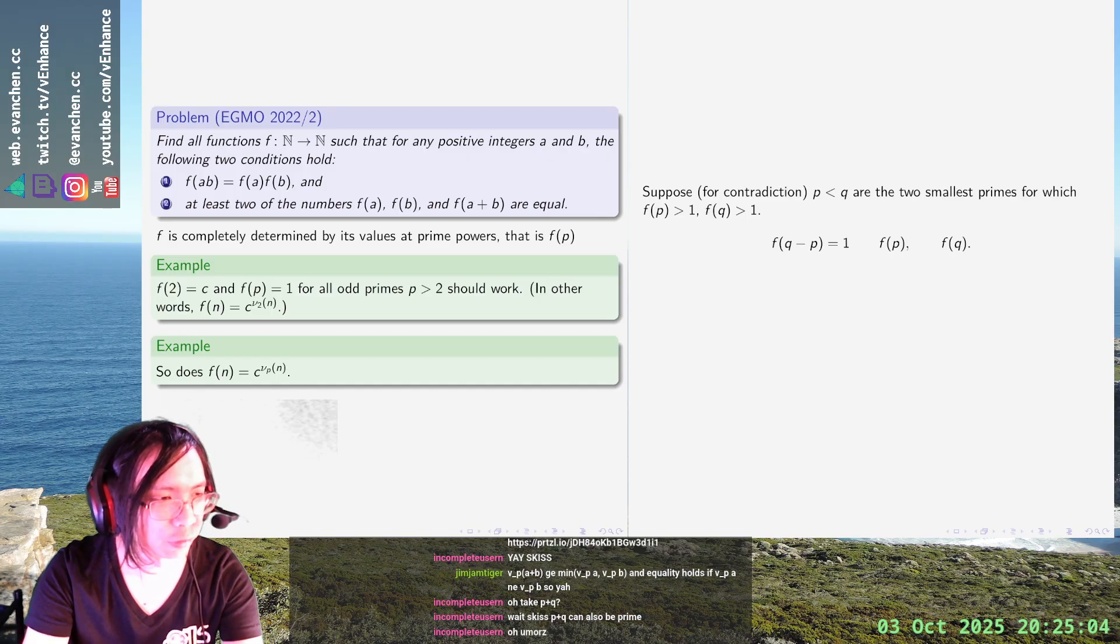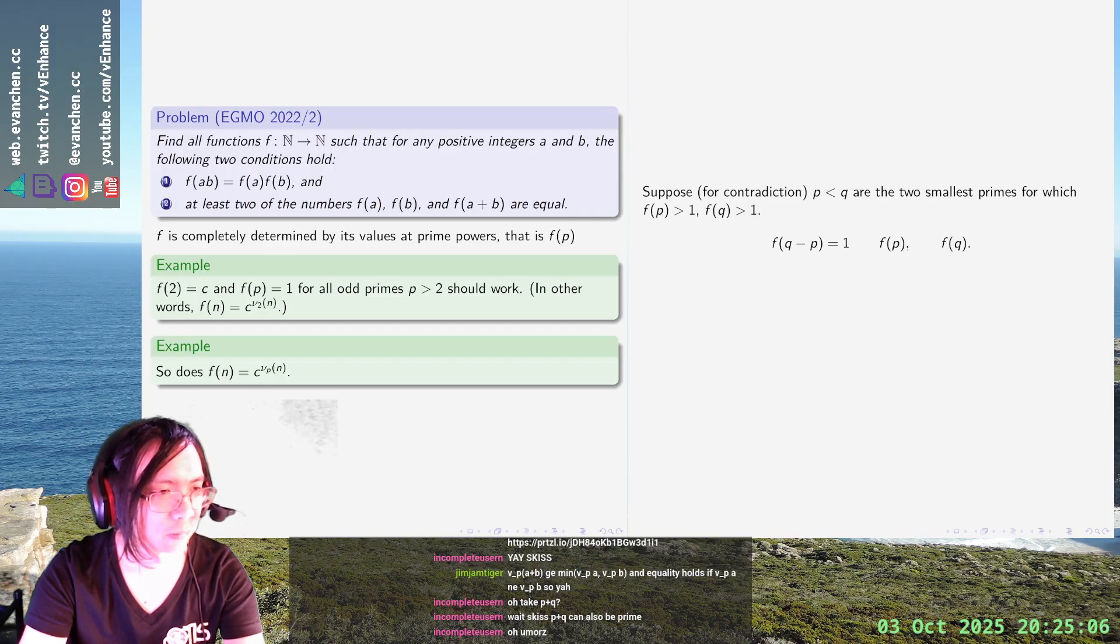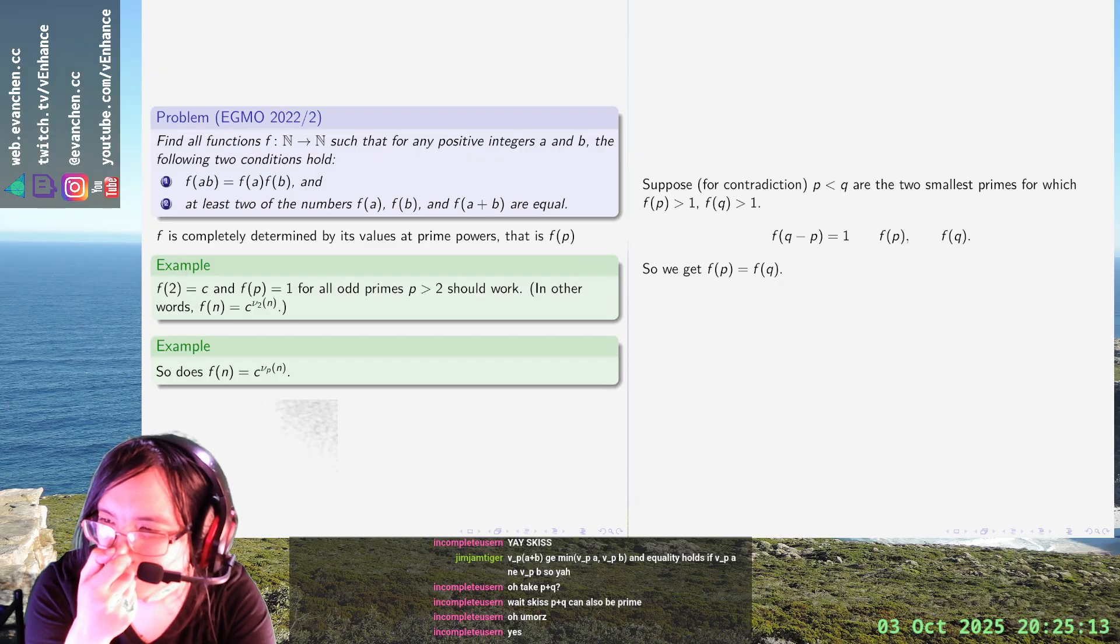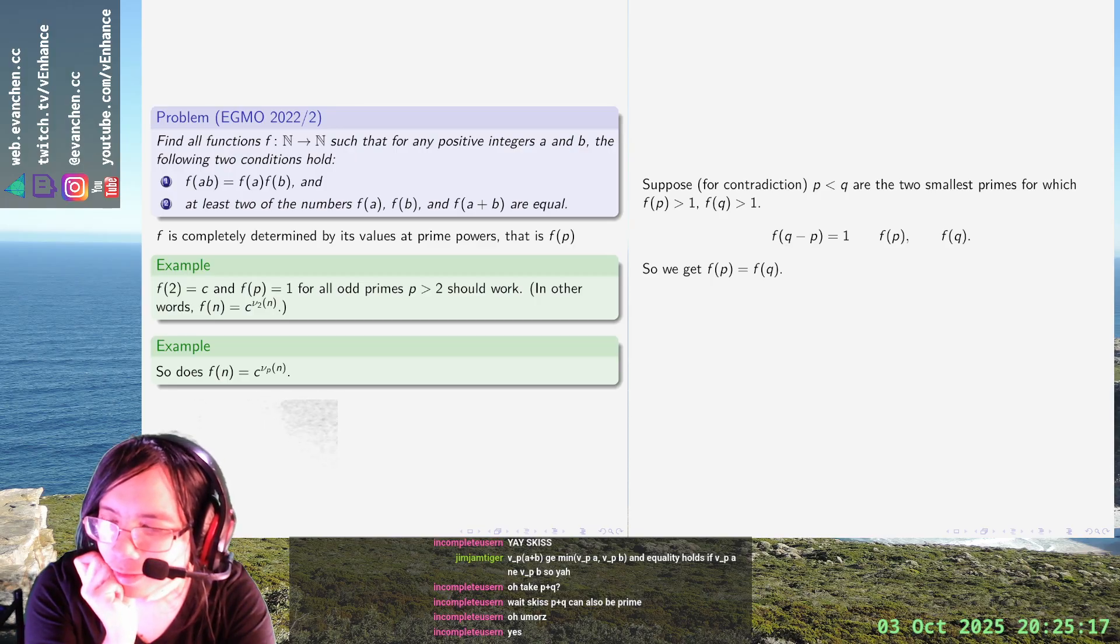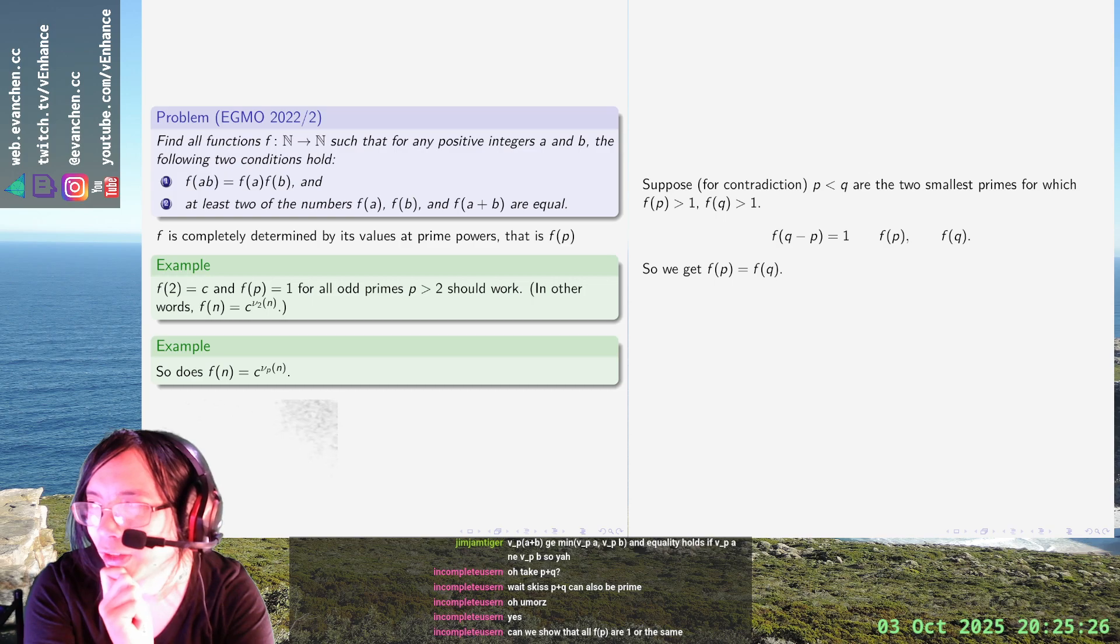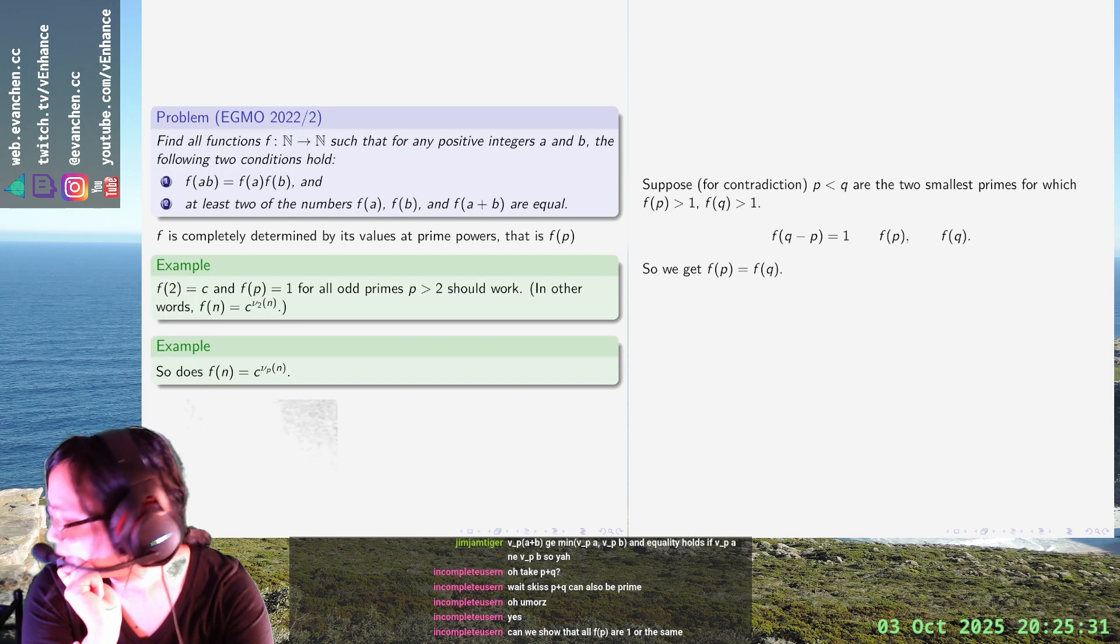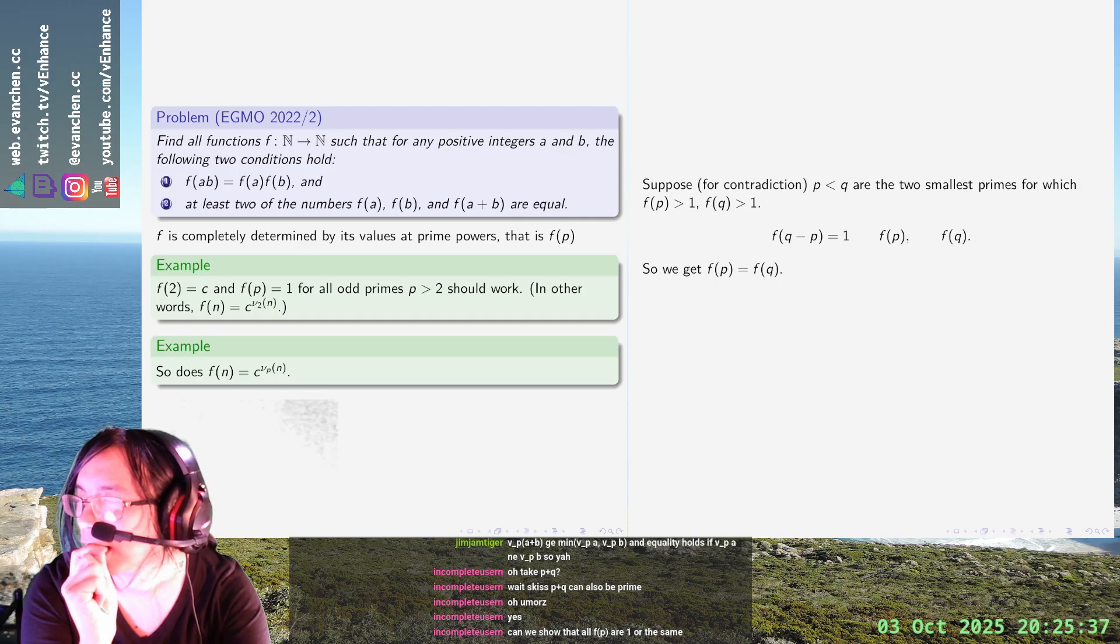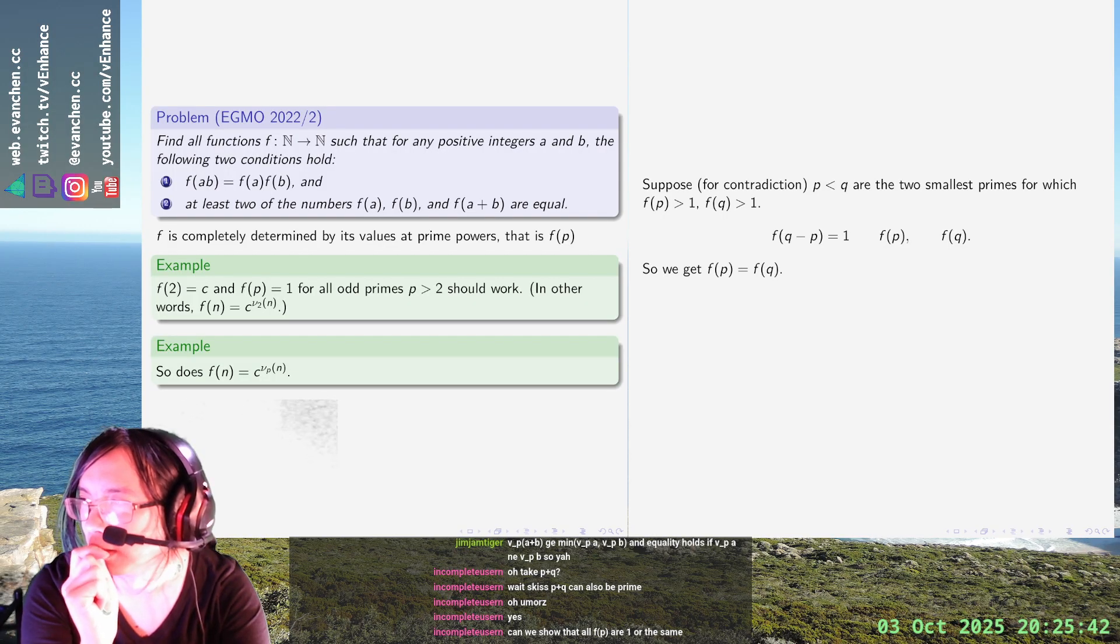So f(q minus p) is made up of a bunch of primes that are smaller. q minus p is neither a multiple of p nor... okay, so this guy's just 1, right? So we get f(p) equals f(q), and that is probably going to cause issues. What if I have c to the v2(n) plus v3(n)? I guess you're worried that not all of the same... no, I don't think it's that complicated. It should just be c to the vp(n).